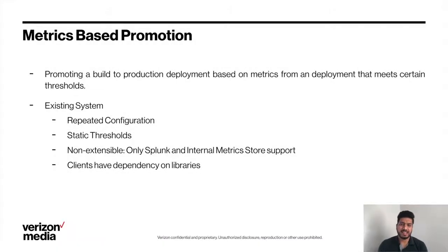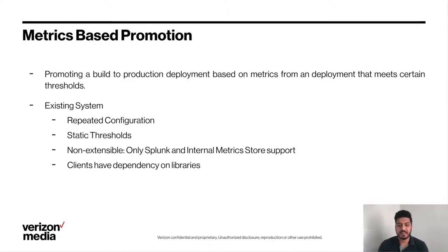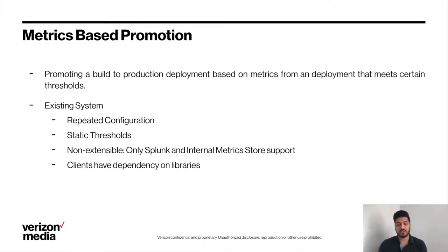What is metric-based promotion? As the name implies, it is promoting a new build to production if certain thresholds are met for a predefined set of metrics. At Verizon Media, we had an existing solution for that, but it had its share of problems. Configuration was often repeated and you'd end up with a huge pull request of JSON that most people would blindly approve. It only supported static thresholds — for example, fail the build if 5XX errors are more than 5%. This is a valid strategy, but increases in 5XX were not always caused by the code change. The tool was not extensible, supporting only Splunk and an internal metrics store. The biggest pain point was dependency on libraries — we had an issue where a library was not upgraded to support Node 12 and we had to turn off the analysis until the client library was upgraded, and even after the upgrade there were compatibility issues.